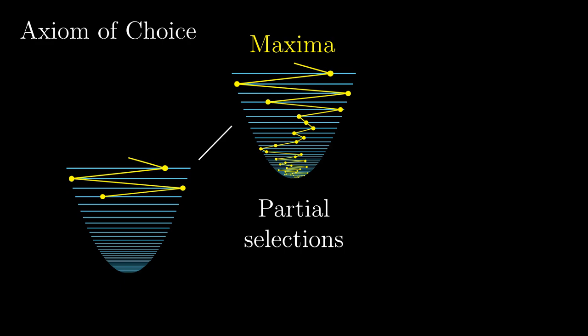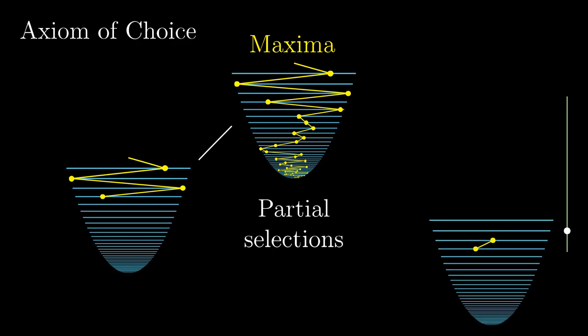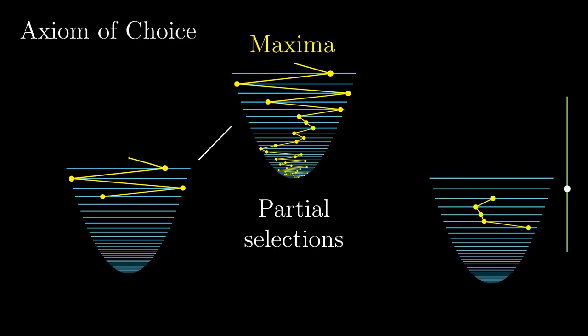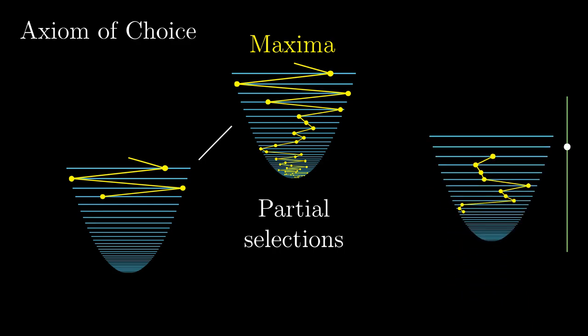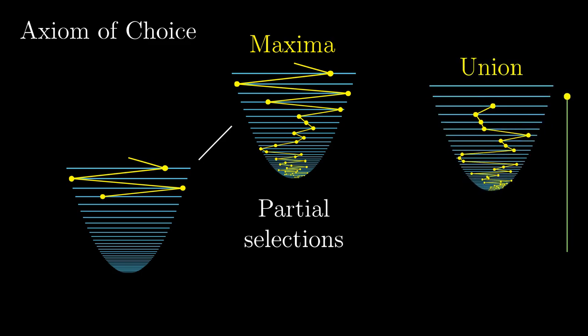To prove the axiom of choice, it is sufficient to verify the chain condition. The reason is standard: in a chain the individual partial choices are comparable, so it is sufficient to take the union of the entire chain to obtain the upper bound.